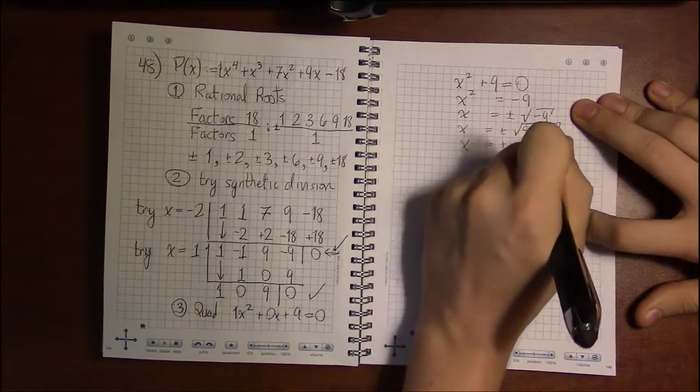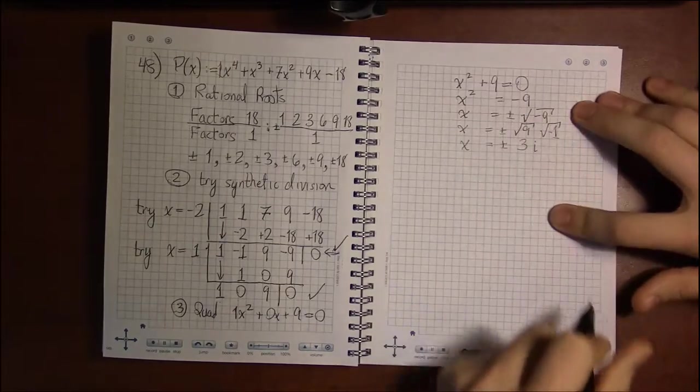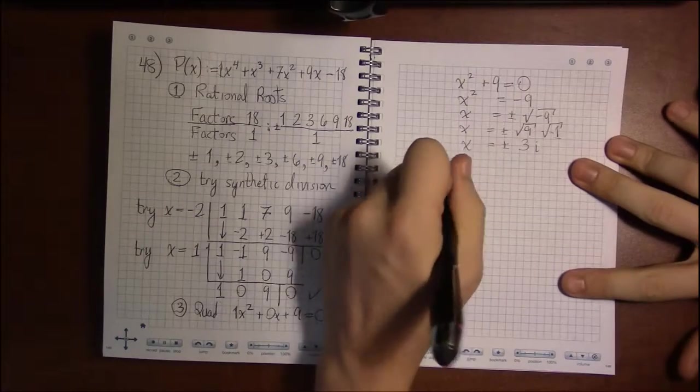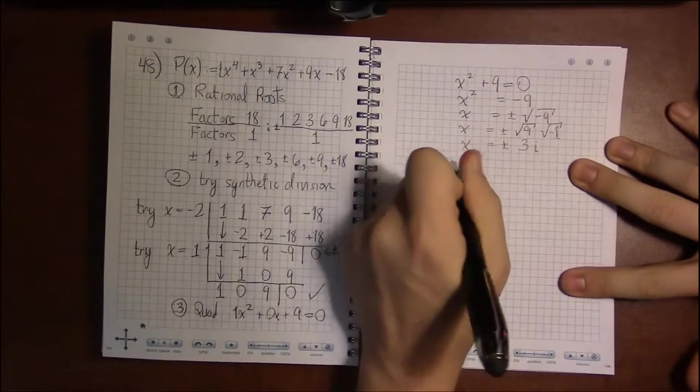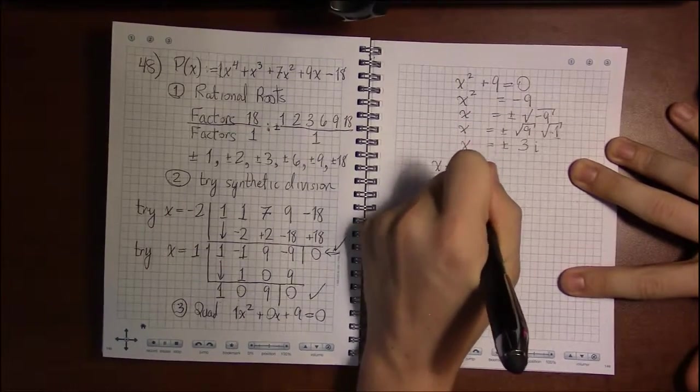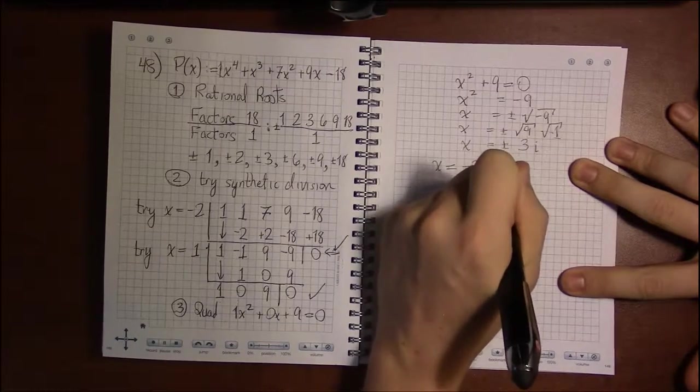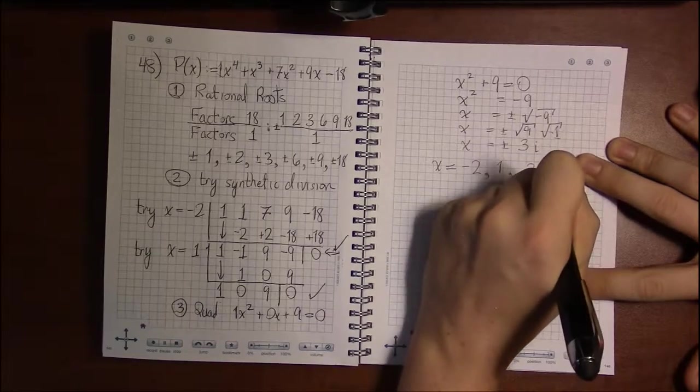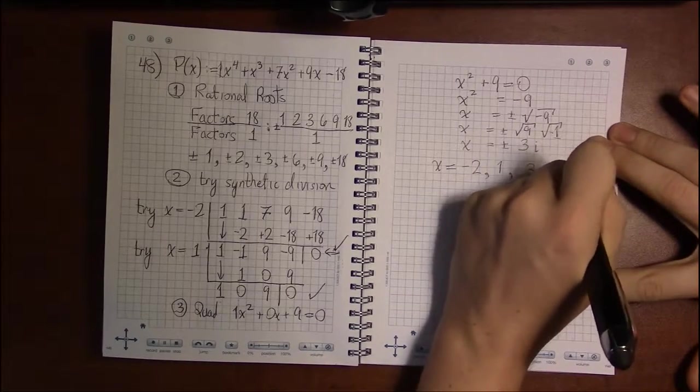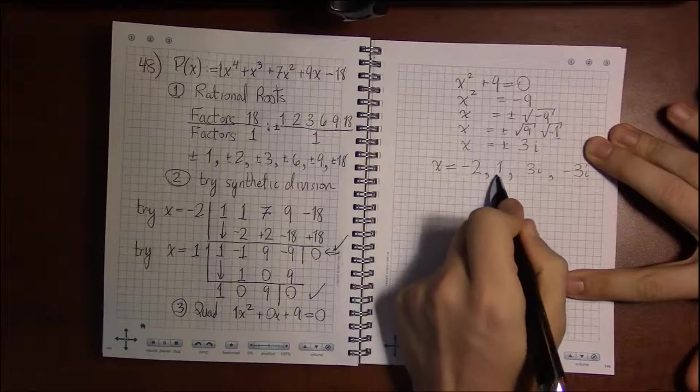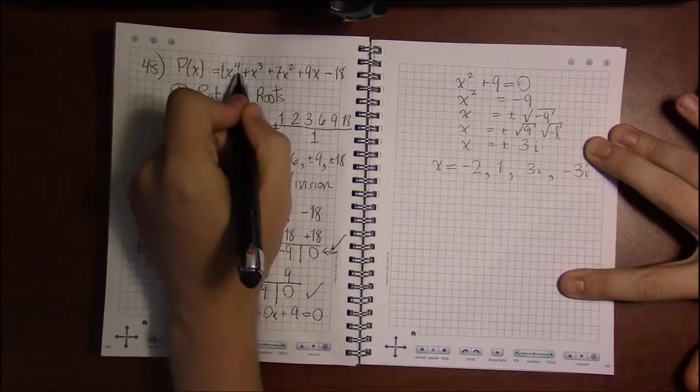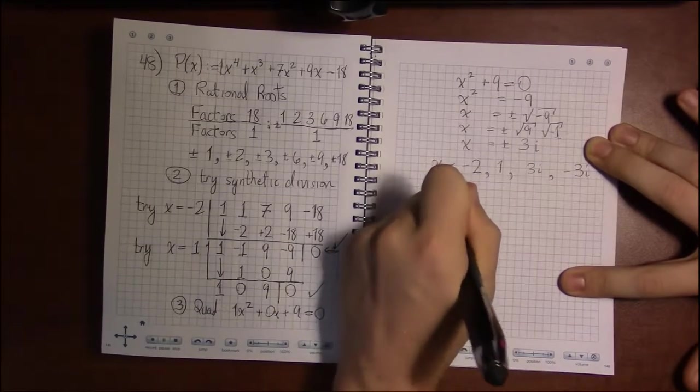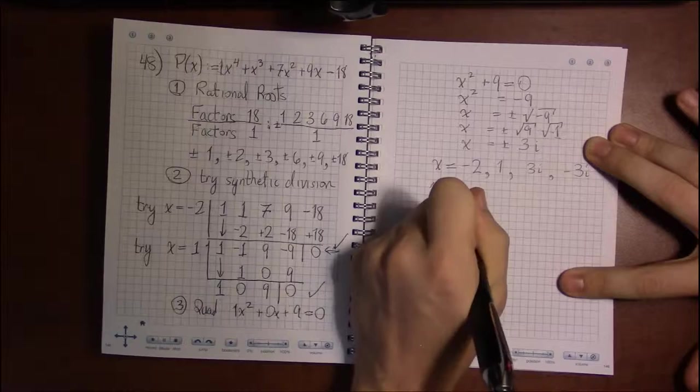Square root of 9 is 3, and square root of minus 1 we're calling i. That means we have 1, 2, 3, 4 zeros: x equals minus 2, x equals 1, x equals 3i, and x equals minus 3i. 4 zeros, degree 4. That was nice. Same number of zeros as roots.